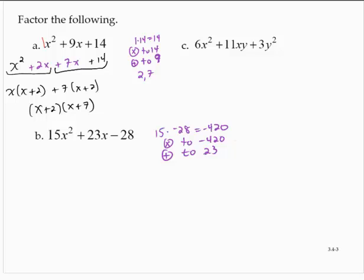I'm going to start listing some pairs of numbers that multiply to 420: 1 and 420, 2 and 210, 3 and 140, 4 and 105, 5 and 84, 6 and 70, 7 and 60, 10 and 42, 12 and 35.